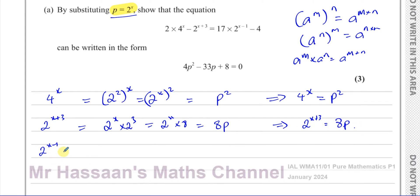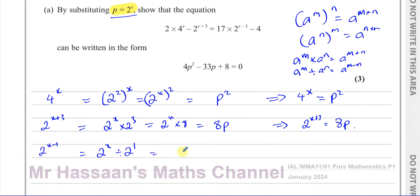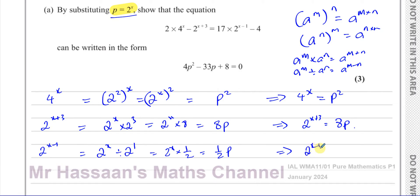And 2 to the power of x minus 1 can be thought of as 2 to the power of x divided by 2 to the power of 1. Using the subtraction law of indices in reverse, this splits into 2 to the power of x divided by 2, which is 2 to the power of x times one half. So this can be written as one half p, meaning 2 to the power of x minus 1 equals p over 2.